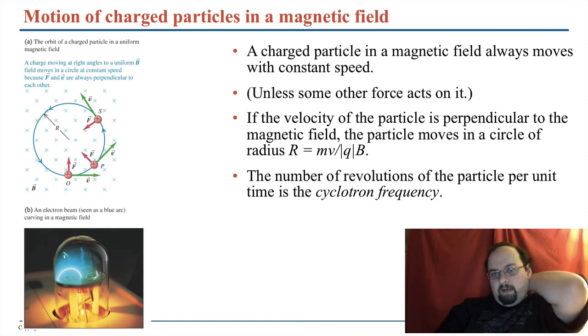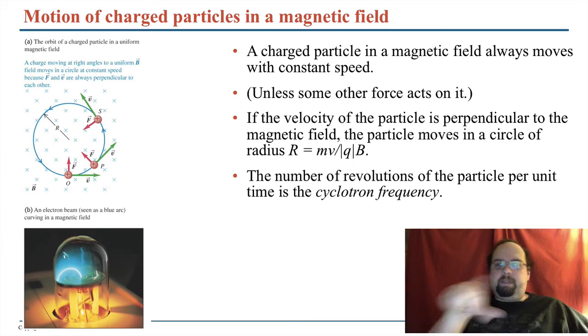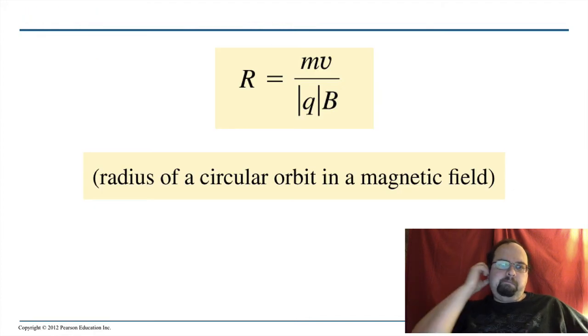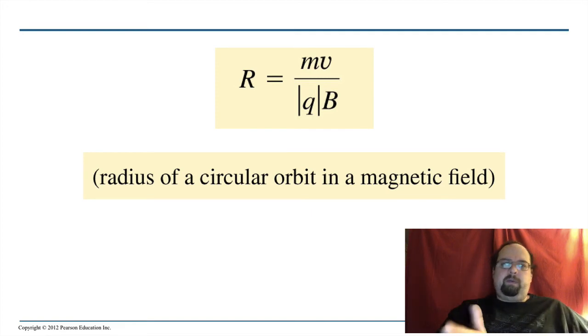So the revolutions per unit time are called the cyclotron frequency, which you could figure out. Once you know the radius of that circle and the velocity of the particle, you can figure out how many times per second it goes around. So, yeah, that's called cyclotron motion. The cyclotron radius here. The radius of orbit of a particle in a magnetic field. Notice Q, you don't want to put a charge sign in there because it'll just tell you whether it's going to go clockwise or counterclockwise. You're still going to use the right-hand rule to determine whether it's going to go this way or that way.